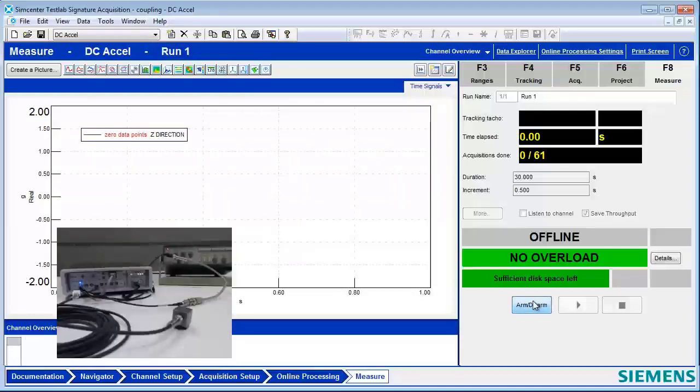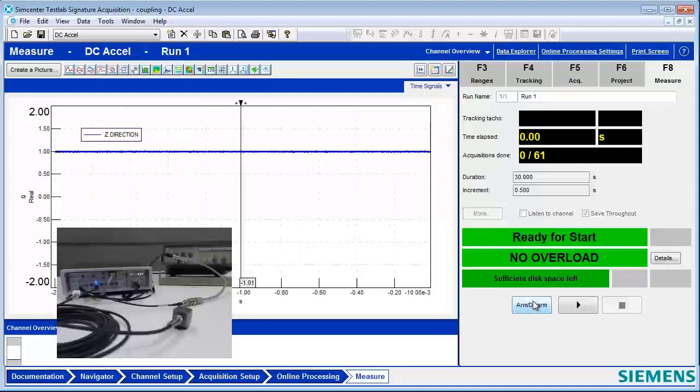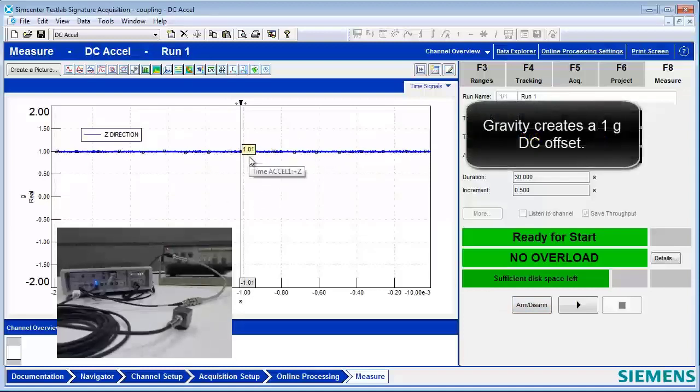This is what's called a DC accelerometer. We have a DC accelerometer hooked up, and right now it looks like it's measuring about 1G. Why is it measuring 1G? It's not even moving. It's measuring the gravity.